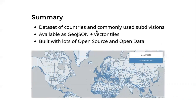So a quick summary of what we've seen so far: with all of these things, we get a dataset of countries and commonly used subdivisions, available as GeoJSON and vector tiles. I'll provide a link to the GitHub repo at the end where you can download all these things. What I really like is that it's built with lots of open source and open data, piecing together many projects from many other people.